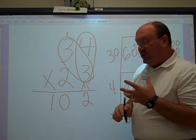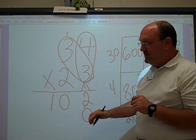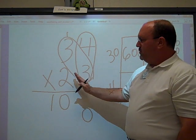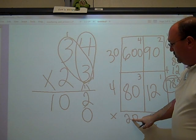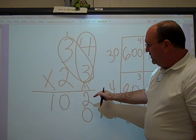Kids always want to know, why do I have to put a 0 to hold a place when I go to my second row of multiplication? Because we're multiplying times 20. We're multiplying times 20. And 20 times 4 is 80. That's why we have to have the 0 here.